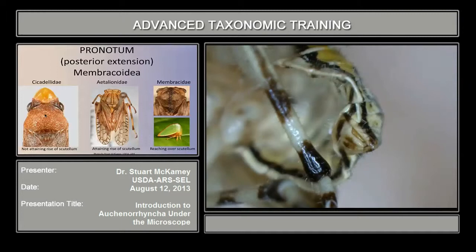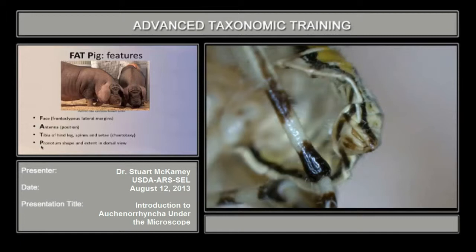In summary, remember FATPIG: the face, the antennae, the tibiae, and the pronotum. With those four features, you can separate the superfamilies and the families of Cercopoidea and Membracoidea.